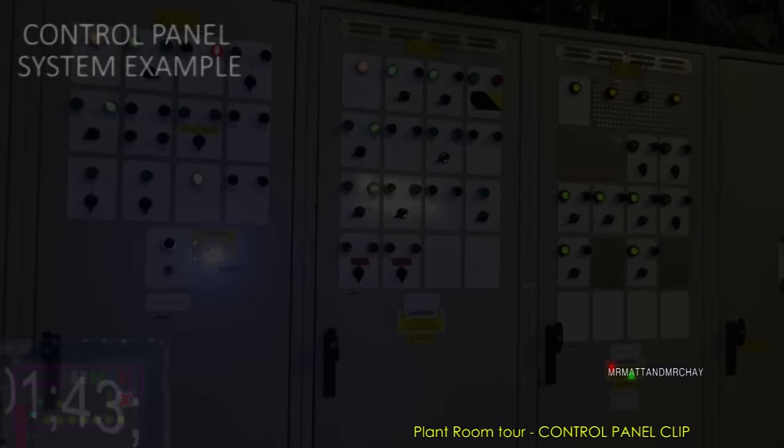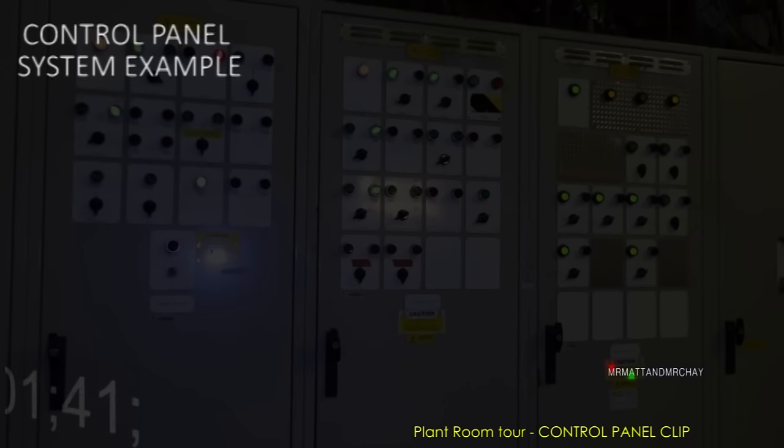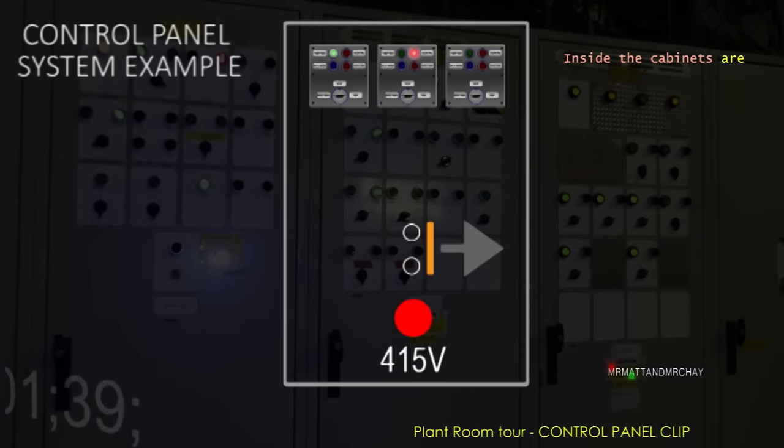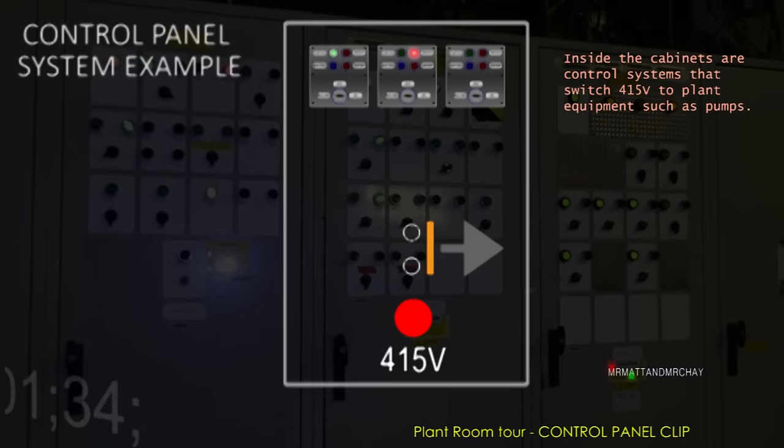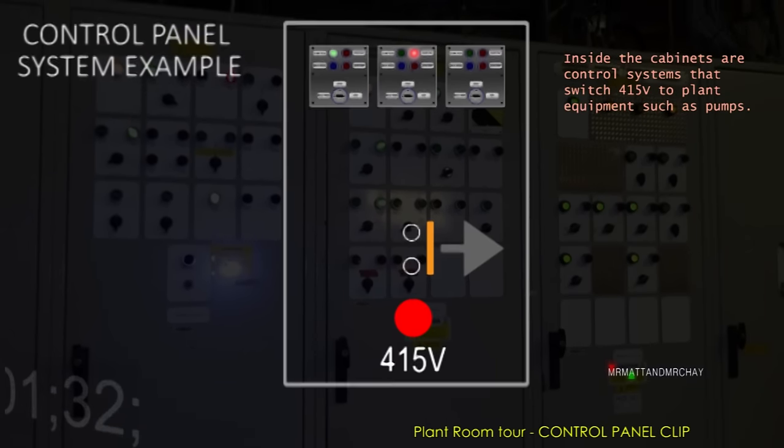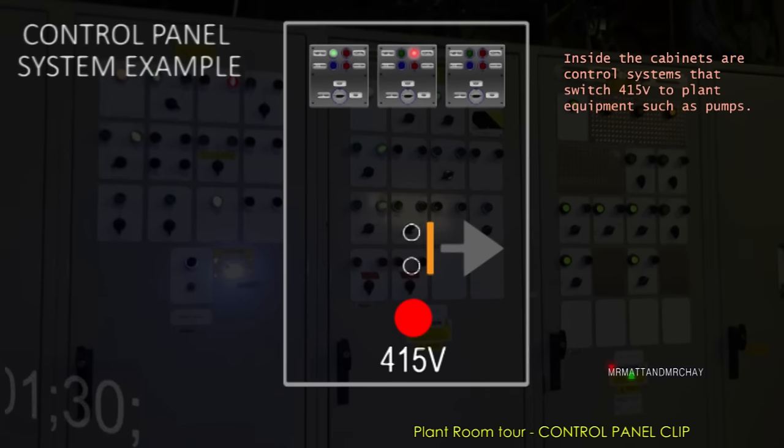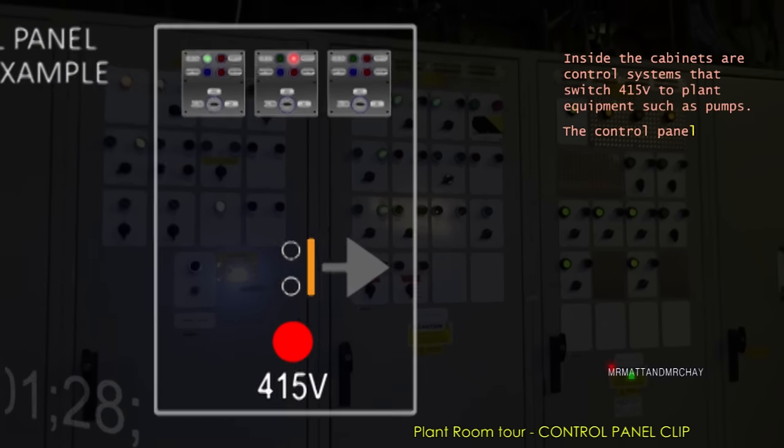Here is an example of a system that could be shown on the front panel. Inside the cabinets are control systems that switch high voltage electricity to plant equipment such as pumps. In the UK this is three phase electricity at 415 volts.